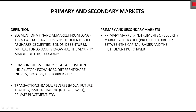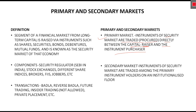To define formally: the primary market is one where instruments of the security market are traded or procured directly between the company and the instrument purchaser. The secondary market is one where instruments of the security market are traded among the primary instrument holders on an institutionalized floor such as a stock exchange — for example, BSE (Bombay Stock Exchange) or NSE (National Stock Exchange).